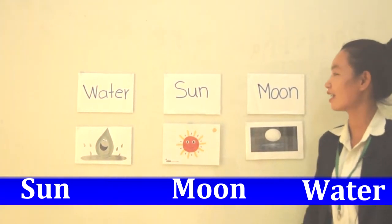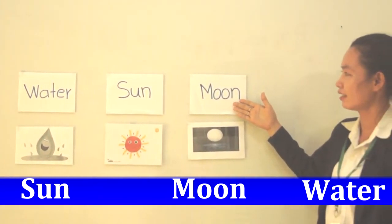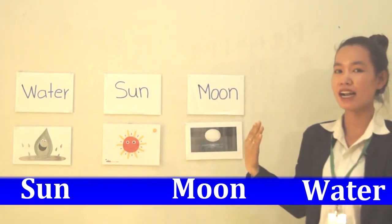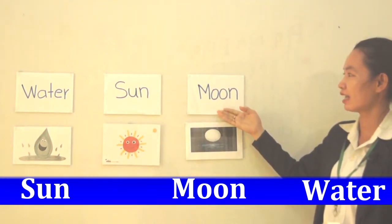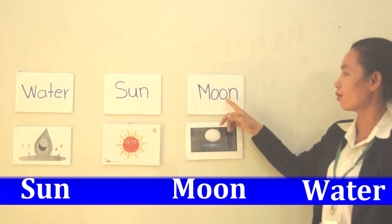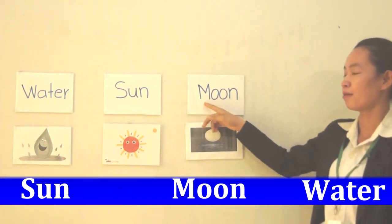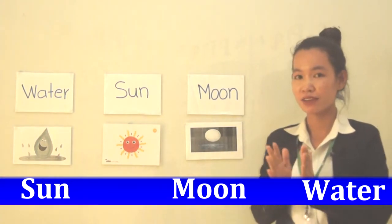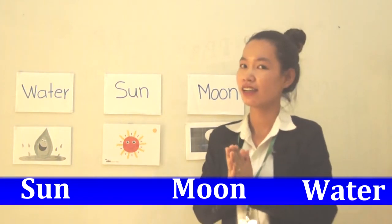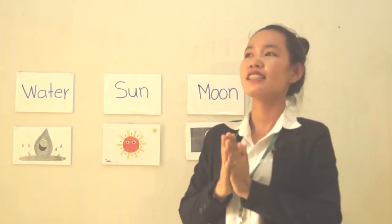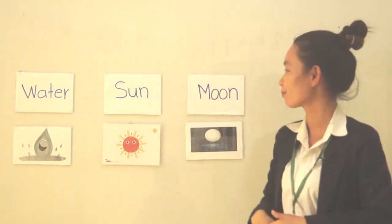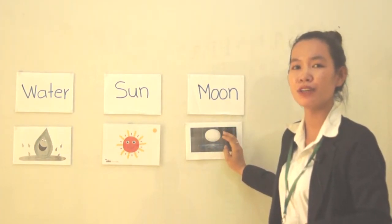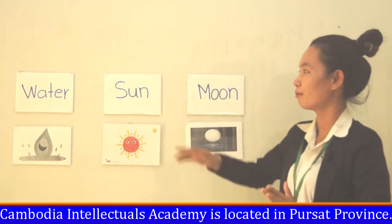Let's see and spell this word: Moon — M-O-O-N — Moon! Can we make a sentence with the word Moon? I see the moon at nighttime. Or another sentence: I like the moon.